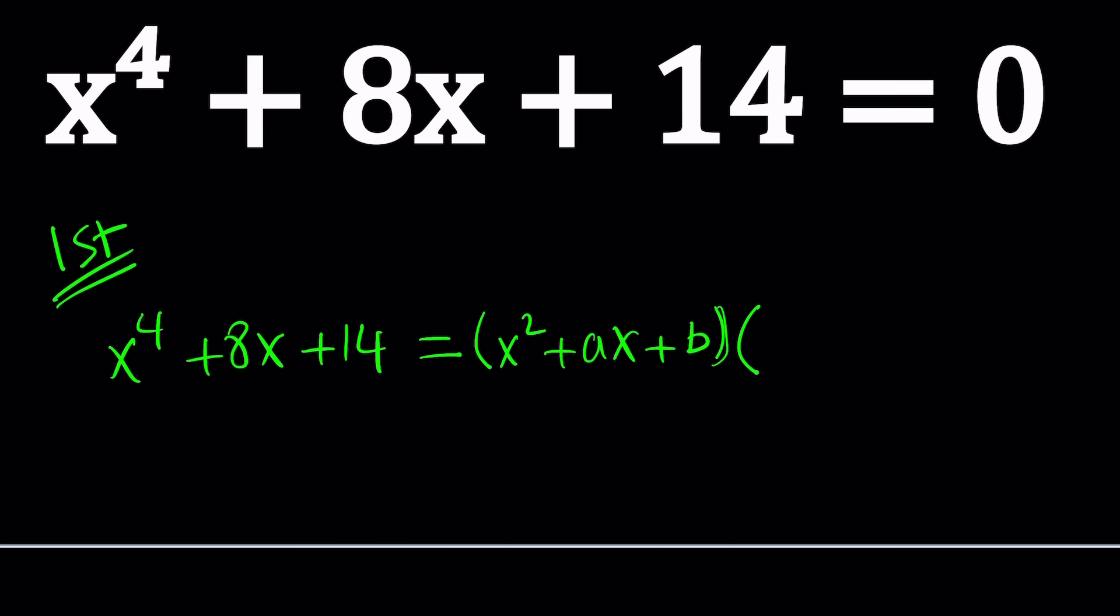And then the other factor, we're going to write it in such a way that there is no x cubed term. And that can be achieved by writing the second one as x squared minus ax. Now, notice that this gives you a negative ax cubed and this gives you a positive ax cubed, which means they are going to cancel out. That's the whole idea. And of course, you have to follow up with another constant because b and c don't have to be the same.